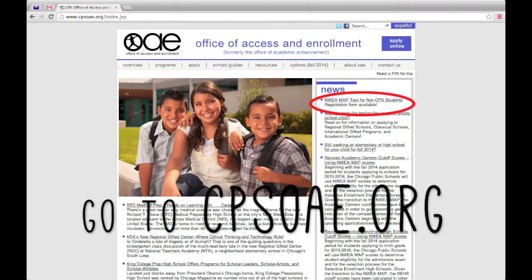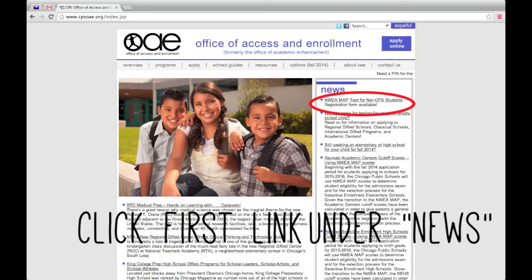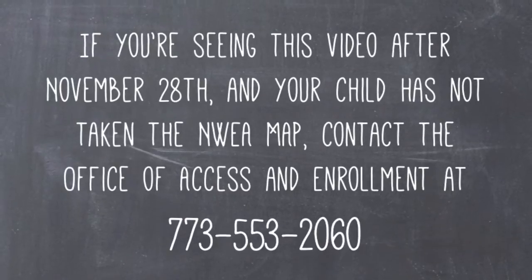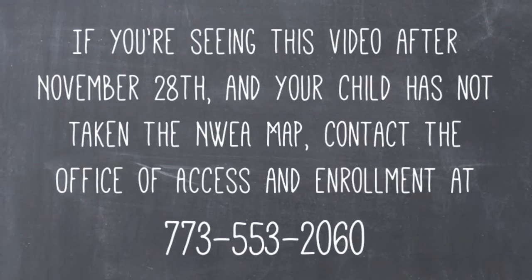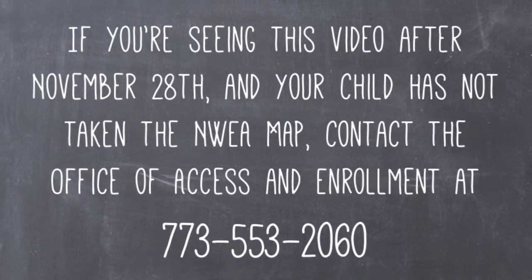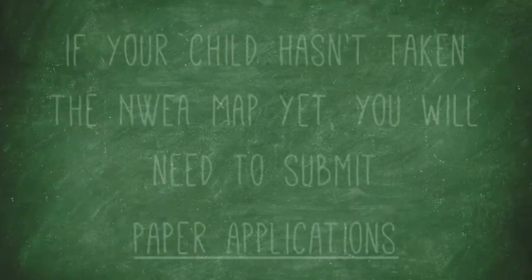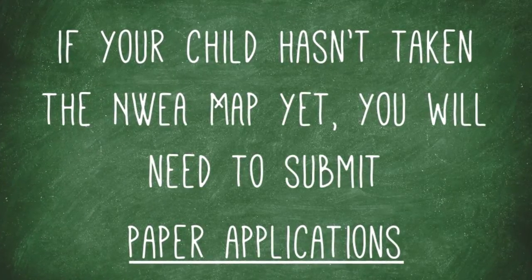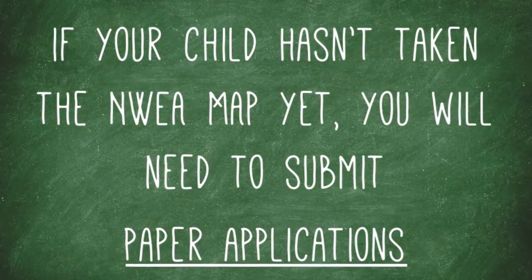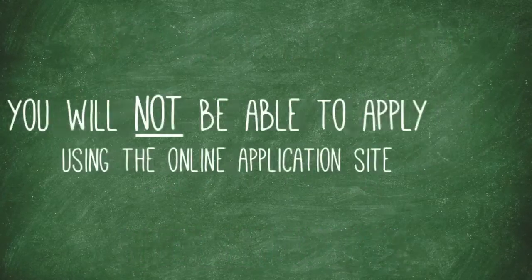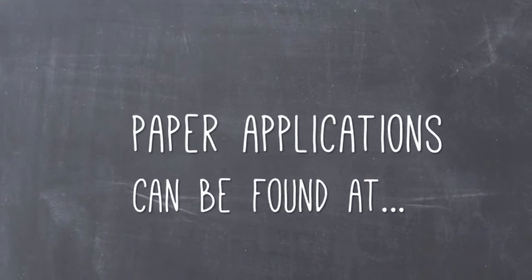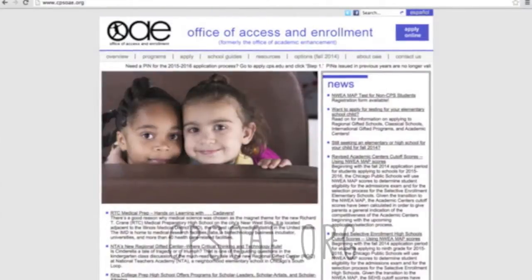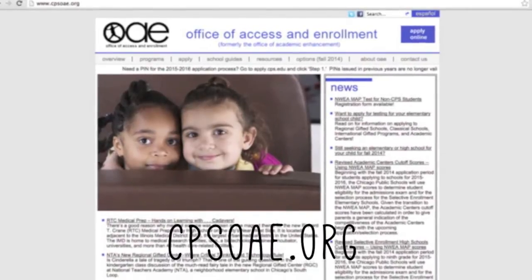You can find this form at CPSOAE.org — click the first link under News. If you are seeing this video after November 28 and your child has not taken the NWEA MAP, contact the Office of Access and Enrollment at 773-553-2060. Also, if your child hasn't taken the NWEA MAP yet, you will need to submit paper applications — you will not be able to apply using the online application site. Paper applications can also be found at CPSOAE.org under the News link.